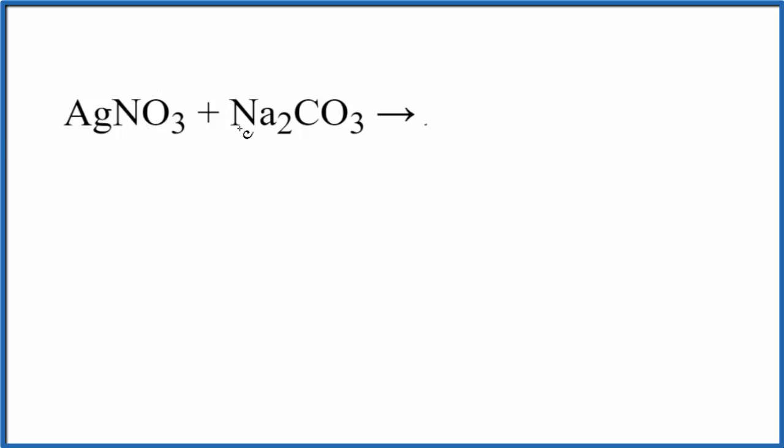So if we look at silver nitrate and sodium carbonate, silver is positive, we have this nitrate negative, we have the positive sodium and the whole carbonate two minus.